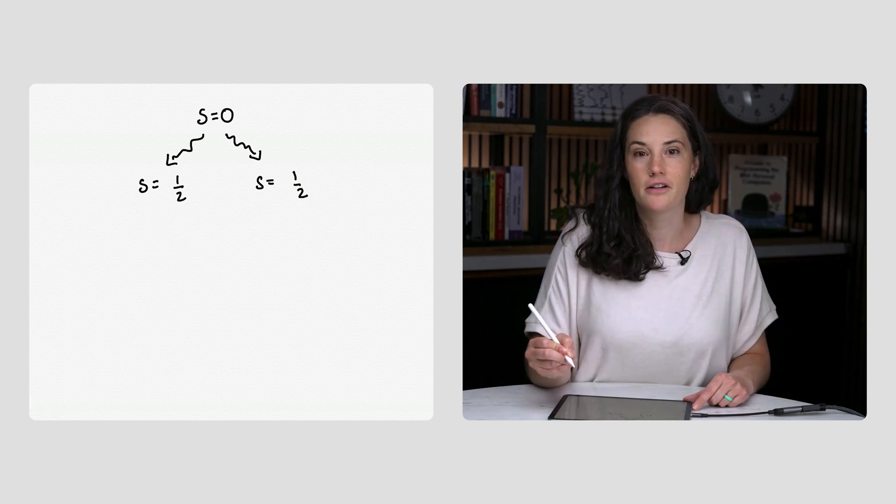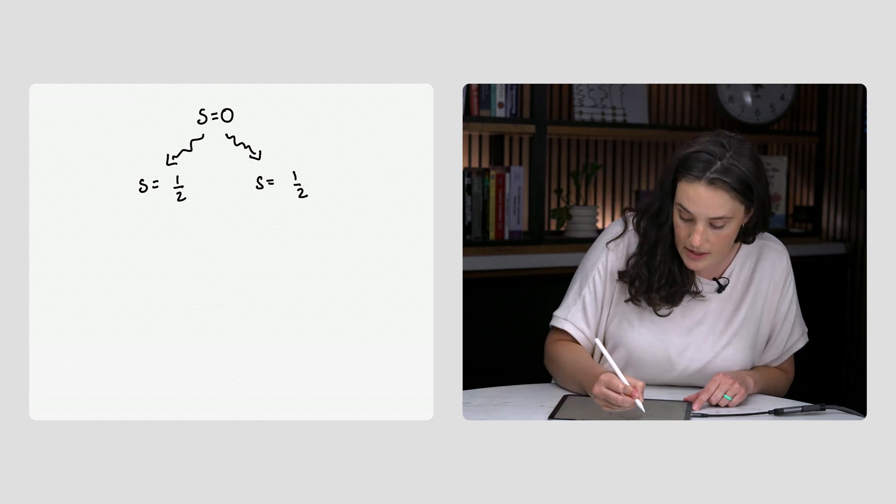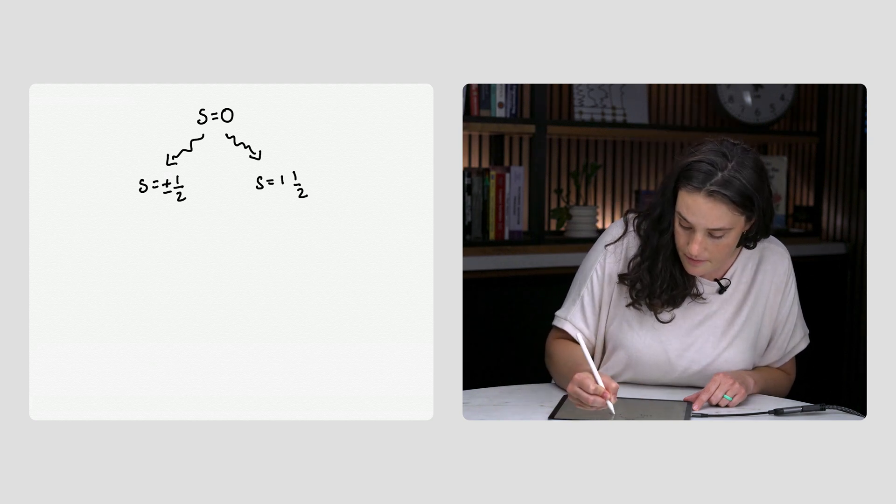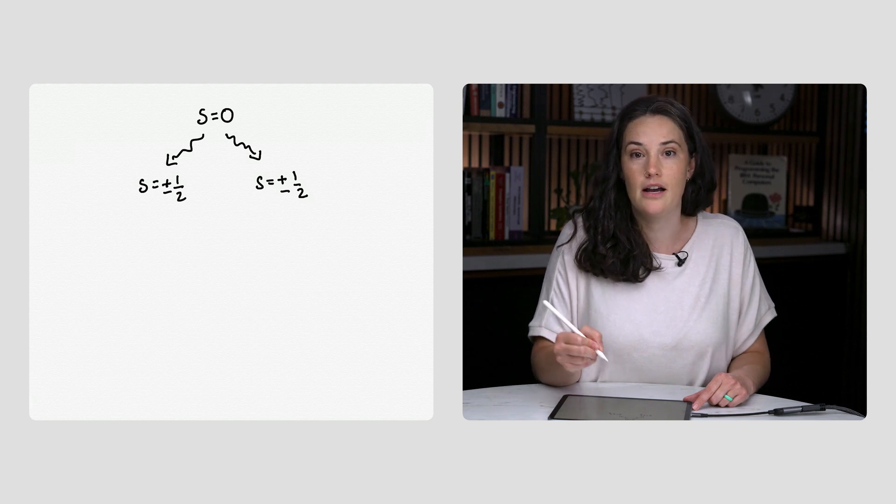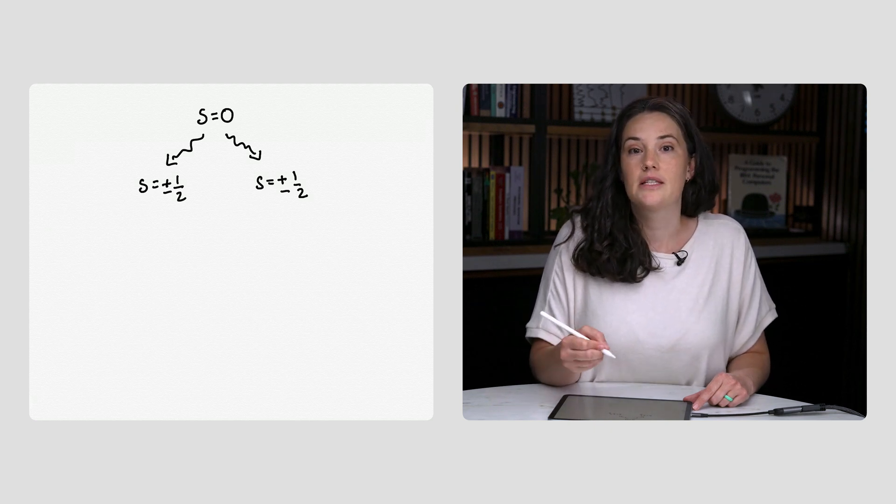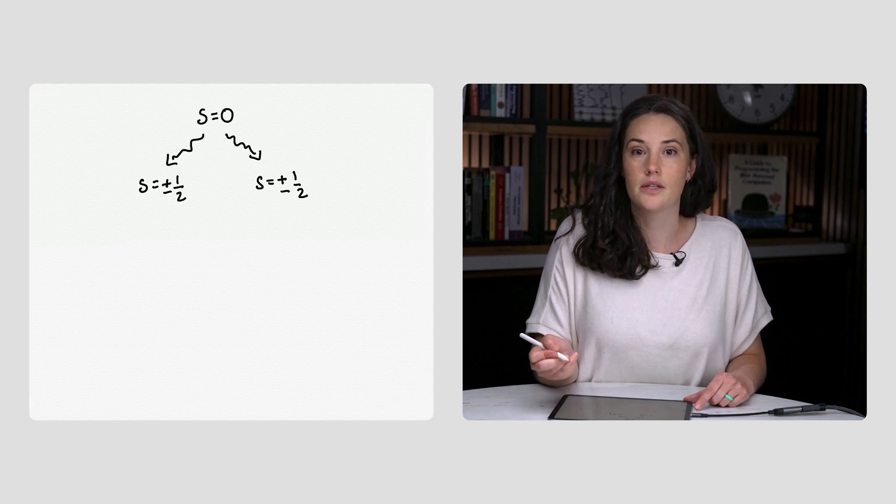Then each of the spin one-half particles can be measured to have either spin plus one-half or minus one-half. Also called spin up or spin down. But since they decayed from a spin zero particle, then the two must combine to have a total spin of zero also.